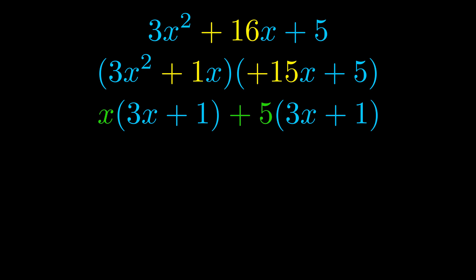Notice also how what remains inside of the parentheses is the same in both cases. The blue values are the same. Those blue values will become one of our factors and we will combine the two green values, the GCFs that we pulled out, to get the other one. And that is our fully factored equation.